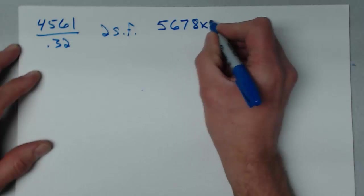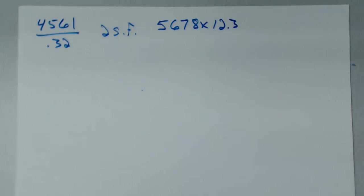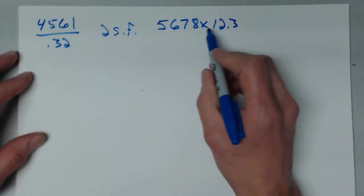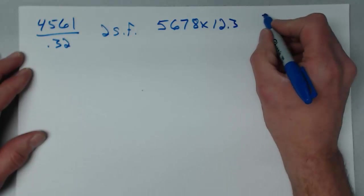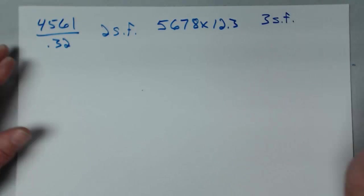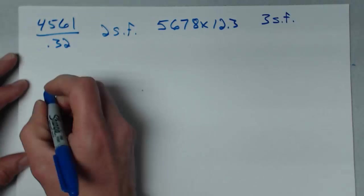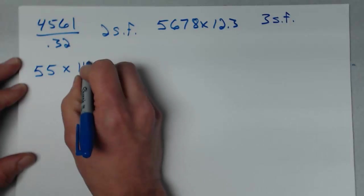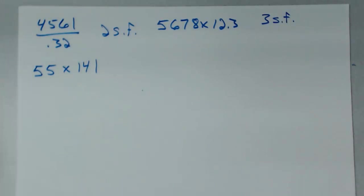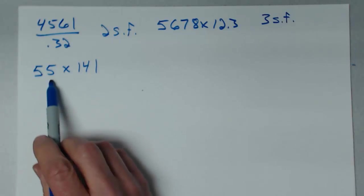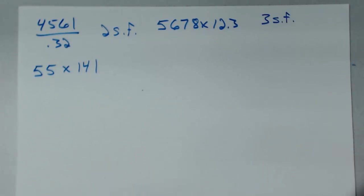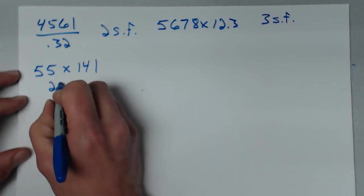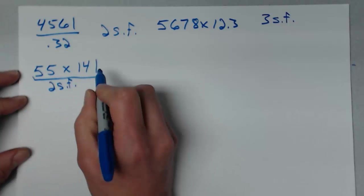Next: 5678 times 12.3. This has four significant figures, and 12.3 has three significant figures. When you multiply those together, keep just three significant figures. Then: 55 times 141. I have two significant figures in 55 and three in 141. The result can only have two significant figures.